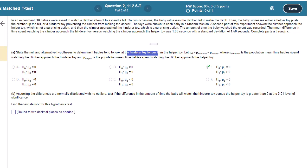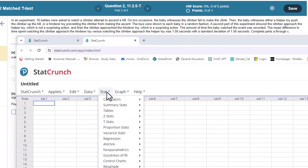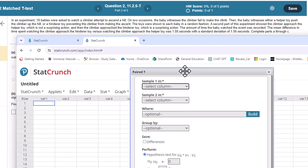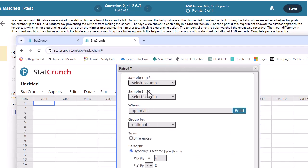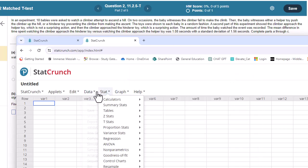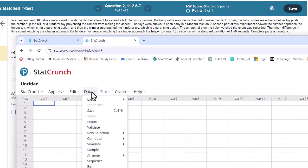Assuming the differences are normally distributed with no outliers, test that the difference in the amount of time the baby will watch the hinderer toy versus the helper toy is greater than zero at the .01 level of significance. Okay, so we're going to go to stat, t-stat. Now, we could go to paired possibly. Let's see what kind of choices we have. No. If we go to paired, even though this is a paired test, it's expecting data. We don't have the raw data. So, we can't use that option. So, what do we do? Well, recall that the paired t-test is just a t-test on the differences.